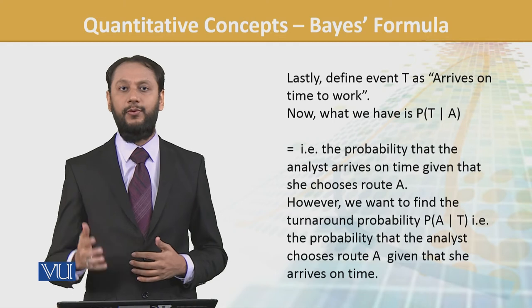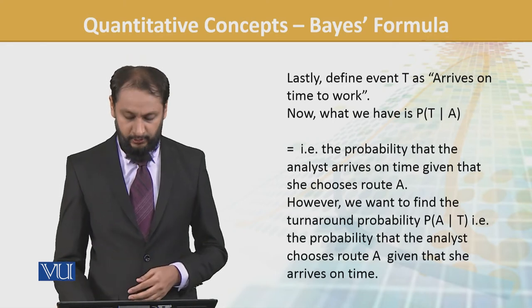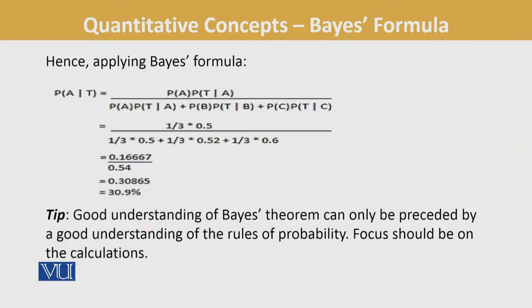The probability of each route is one-third since there are three options available. We have the respective probabilities of arriving on time for each route. Applying Bayes formula, you can easily see the number is 30.9%. So we have a 30.9% chance that she had taken route A and reached on time.